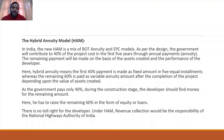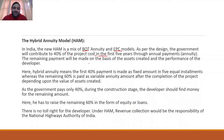The Hybrid Annuity Model is a combination of the Build-Operate-Transfer model and the EPC model. The government provides 40% of the project cost within the first five years; the developer must raise the rest from the market. This model was introduced when many road infrastructure projects had stalled. The results have been quite fruitful, though recently some new issues have emerged, which the article discusses.